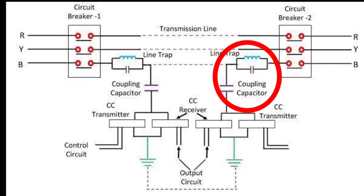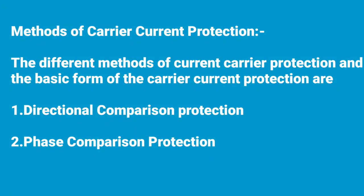There are two methods of carrier current protection. The two carrier current protection methods are: one, directional comparison method, and two, phase comparison method. The basic forms of carrier current protection are directional comparison and phase comparison protection.